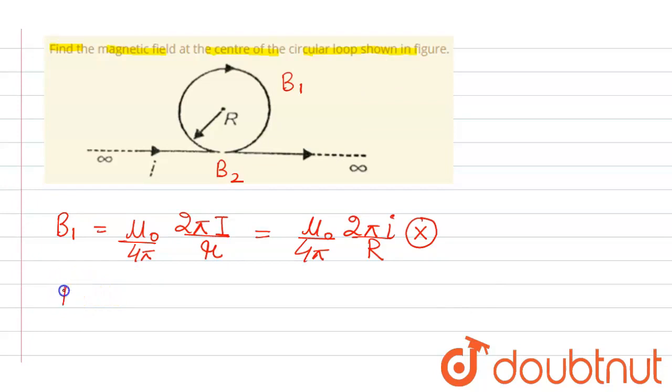Now we find the magnetic field due to infinite wire. Due to infinite wire, the magnetic field is given μ₀/(4π) × 2i/a.